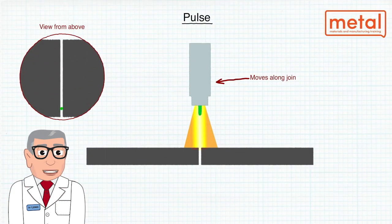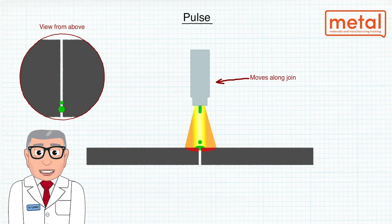In the pulse spray transfer mode, which contains a high current density followed by a lower current density pulse of current, one drop of metal transfers across the arc at a frequency range of 30 to 400 pulses per second, which is controlled by the settings on the equipment.